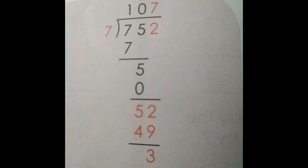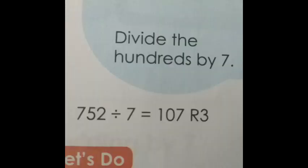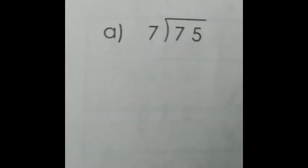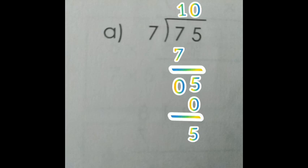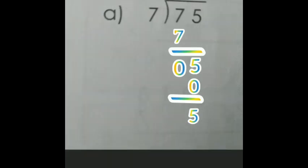In the dividend 752, is there any number after 2? No, so we have to stop up to this. Here 107 is the quotient and 3 is the remainder. 752 divided by 7, we will get the answer as 107 R 3. Same as the previous problem, we have to complete this problem also, but after 75 we don't have any other number, we have to stop up to the remainder 5. Hope you all understood when we have to stop the problem and when we have to proceed it.